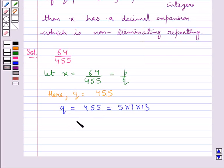This shows that prime factorization of q is not of the form 2 raised to the power n multiplied by 5 raised to the power m, where m and n are non-negative integers.